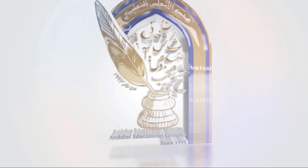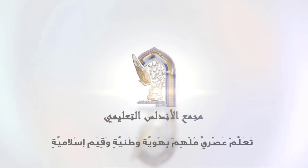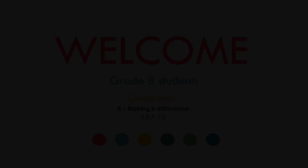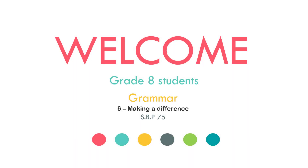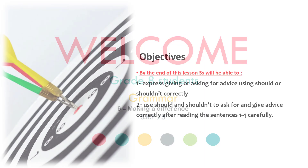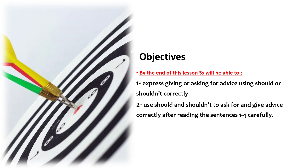مجمع الأندلس التعليمي - تعلم عصري ملهم بهوية وطنية وقيم إسلامية. Welcome, grade 8 students. Today's lesson is grammar. You can find it on page number 75 in your student's book. The objectives of this lesson are to express giving and asking for advice using 'should' or 'shouldn't', and to use it in the lesson.